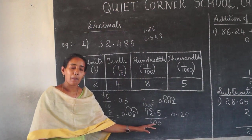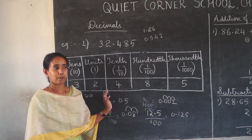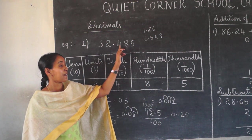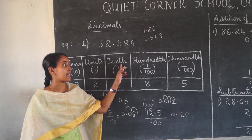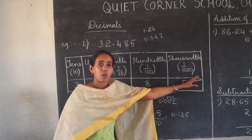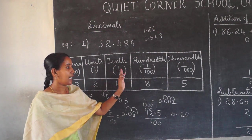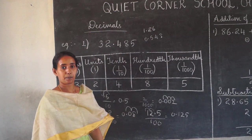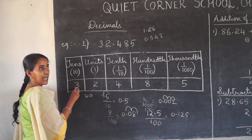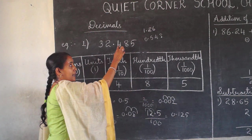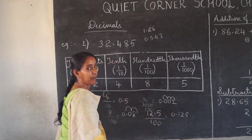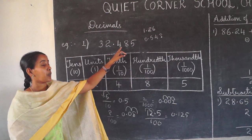So depending upon the number of zeros, the decimal point shifts towards the left side. Now how to write the place value chart for a decimal number? The number which comes first after the decimal point is the tenths place, the second is the hundredths place, the third is the thousandths, then ten-thousandths, and so on. This represents 1 by 10, 1 by 100, 1 by 1000. So 32.485 can be written in a place value table as: tens place 3, units place 2, tenths place 4, hundredths place 8, thousandths place 5.